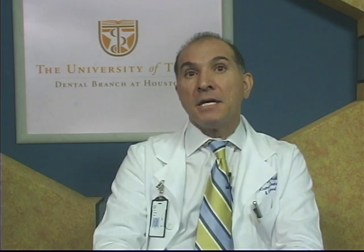Mutually protected occlusion provides us with the desired relative orthopedic stability of the joint. Canine rise is the optimum form of protection.